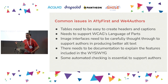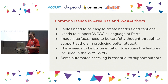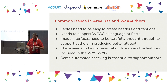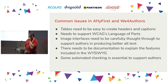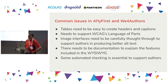Common issues between Ally First and WeForAuthors: tables need to be easy to create with headers and captions — we can't give people a complicated user interface with the most flexibility, we need to give them something that limits to the most popular options. Support for WCAG's language of parts is another one. Image interfaces need to be carefully thought through to support authors in producing more accessible content. There needs to be better documentation explaining the features in the WYSIWYG, and there needs to be some automated checking to support authors.